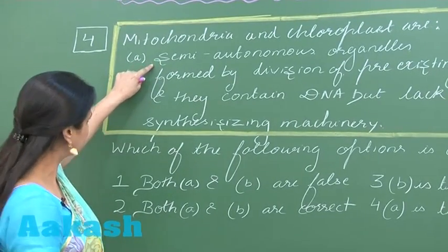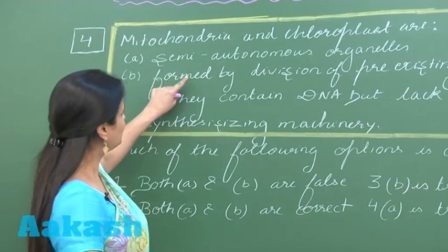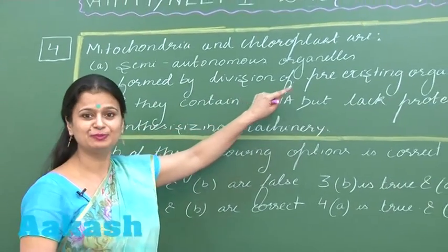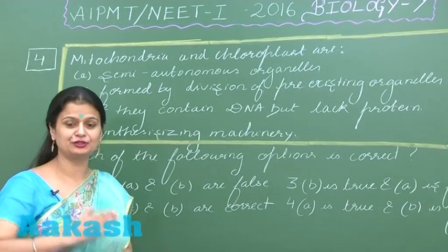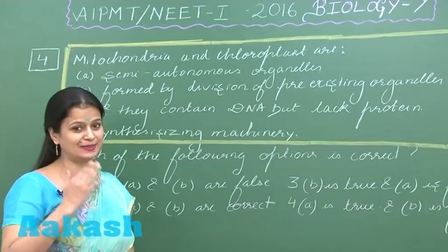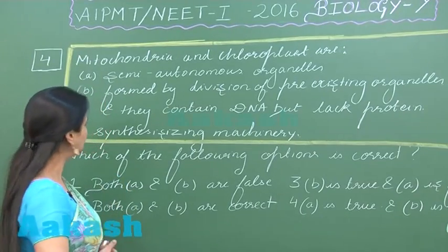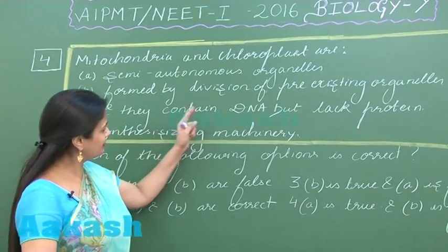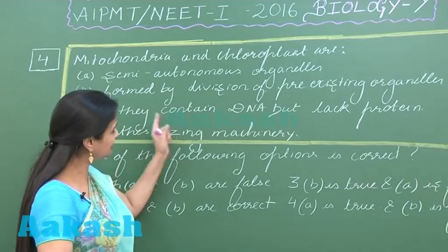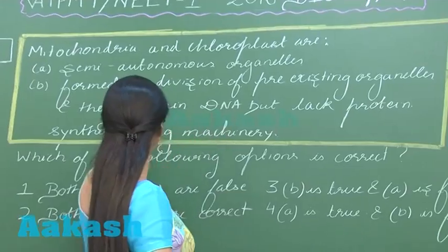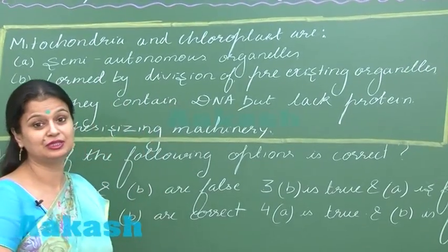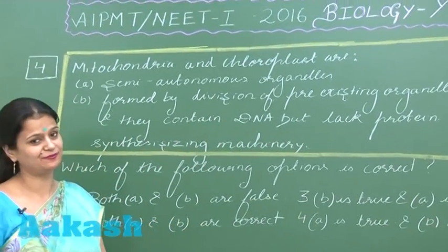So the first option is correct. Moving to the second one: they are formed by division of pre-existing organelles - yes, they are formed by binary fission of mitochondria as well as chloroplasts. And they contain DNA - yes, that's also very true. But they lack protein synthesizing machinery - wrong! They have ribosomes.